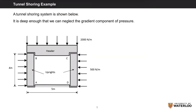Here is our example of the tunnel shoring system. Note that it is deep enough below ground that the pressure gradient over its height is relatively small compared to the average pressure, so we can neglect the gradient component of pressure. Before we move on to the questions, we'll establish our coordinate system: up, right, and counterclockwise will be our positive sign conventions.